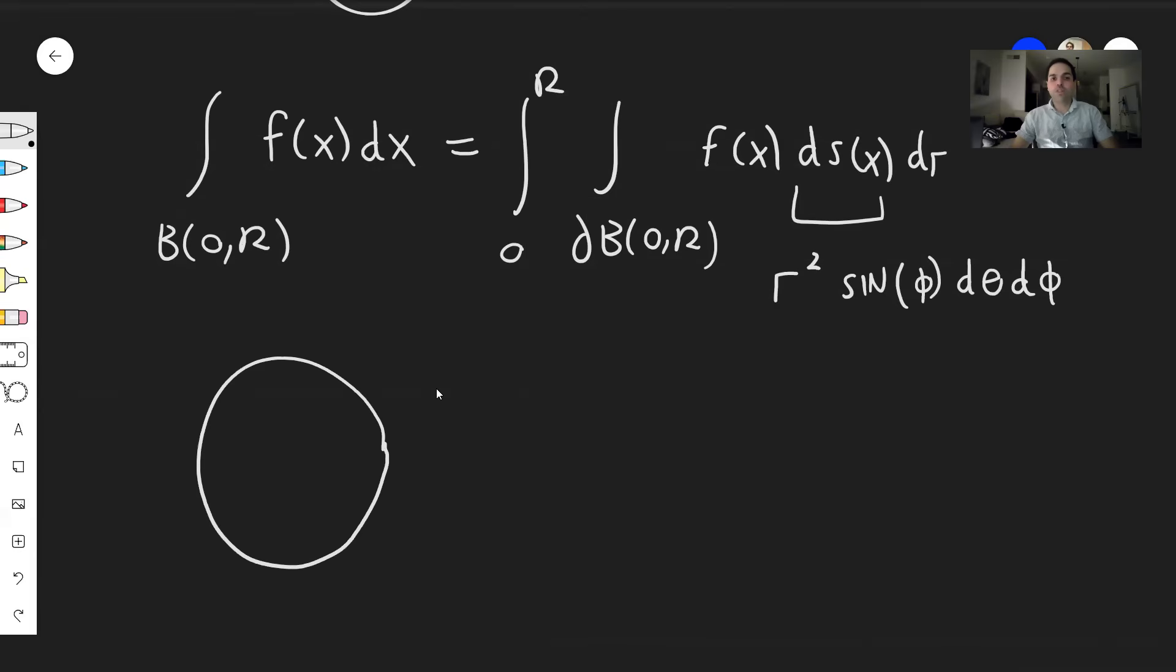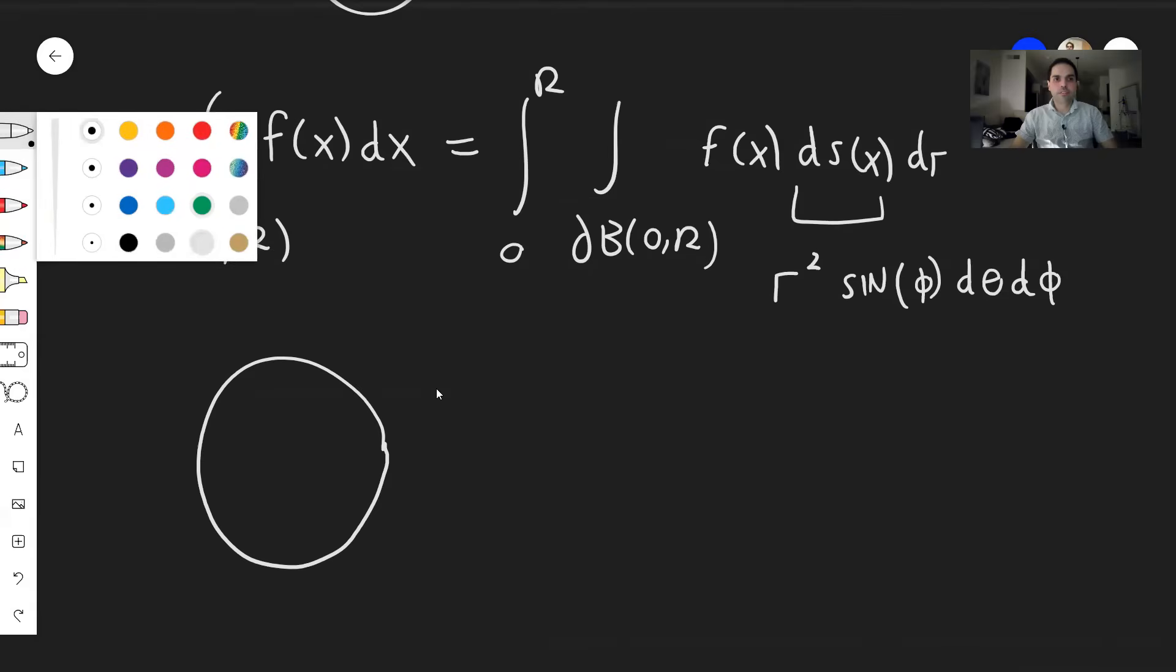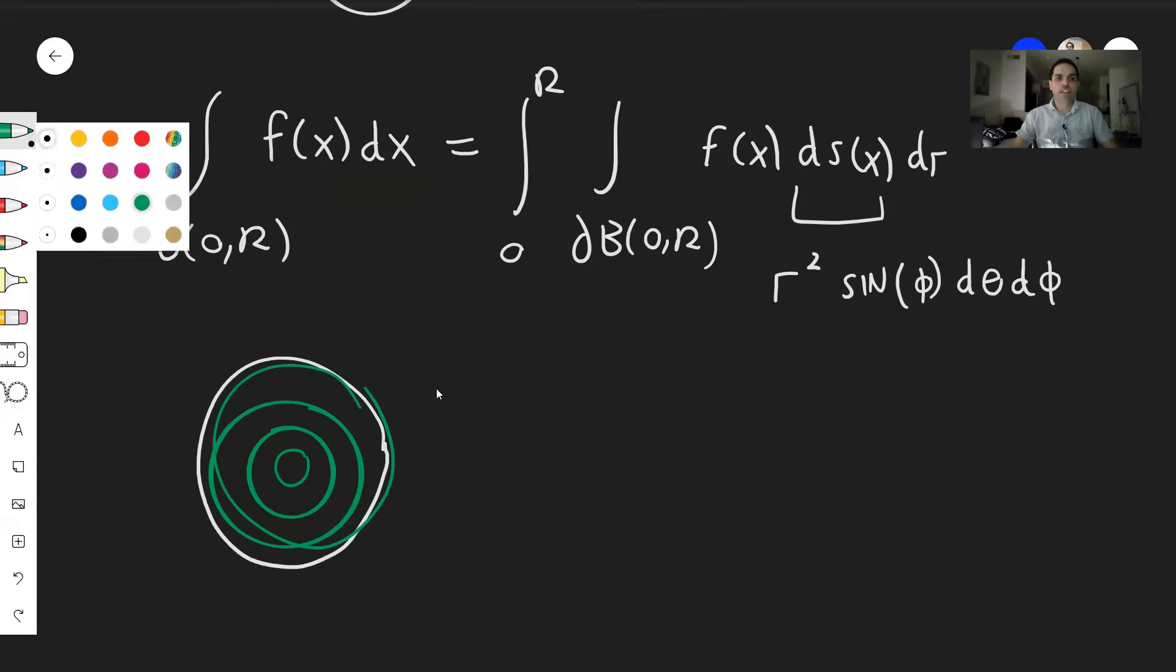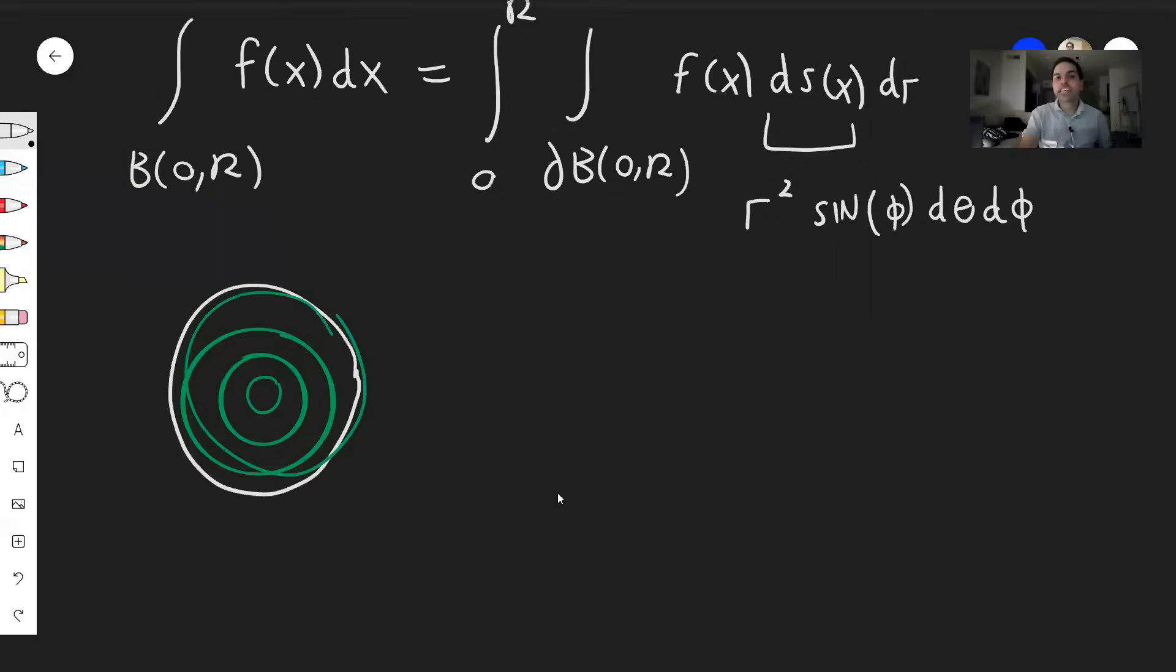So what did we do here? We tried to integrate over this region, which is the ball. And the idea was, well, you just decompose it into little shells and you add up the shells. Now, what if instead of integrating over the ball, you want to integrate your function over some weird wobbly region?